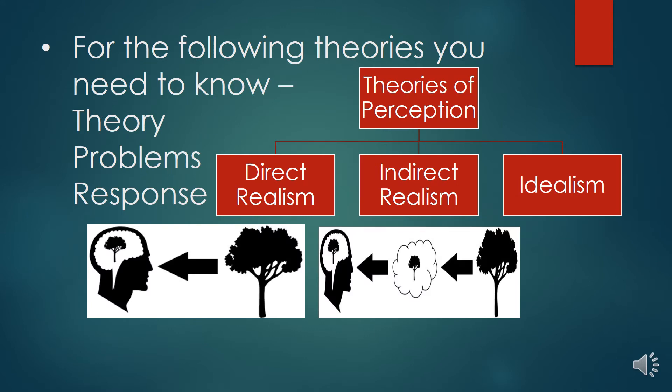Over the next few weeks, we're going to be looking at certain theories of perception. We're going to start off by looking at direct realism, then on to indirect realism, and finally we'll be considering the ideas — quite radical and extreme — of idealism. We also have to consider the problems with these theories as we go.